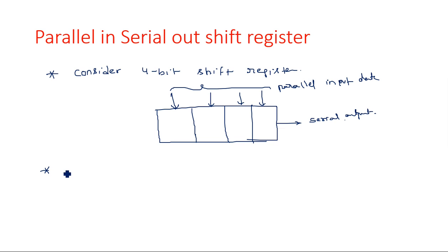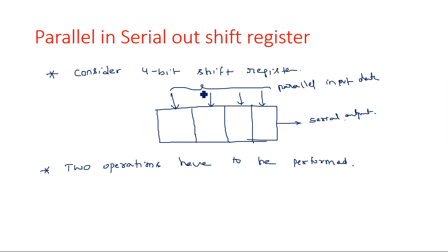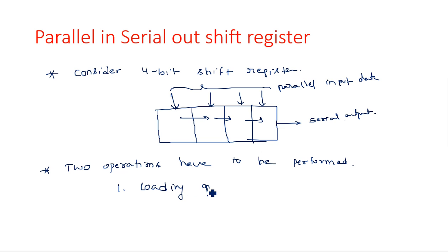In this parallel-in serial-out shift register, two operations have to be performed. First, the parallel input data enters all the flip-flops simultaneously — that is the loading operation. Second, the data already held by the flip-flops needs to be shifted from one flip-flop to the next, and finally to the output. So the two operations are: loading operation and shifting operation.